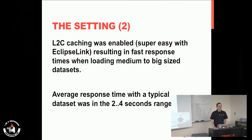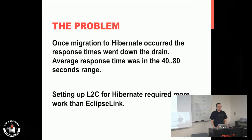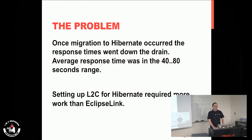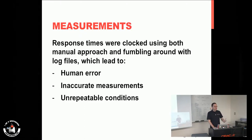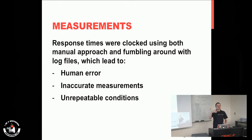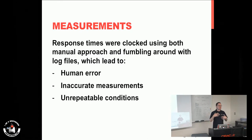We had measurements showing that EclipseLink was very fast — replies in the 2 to 4 seconds range, which was pretty good. But when we did the migration to Hibernate, responses were coming in within 40 to 80 seconds. That was definitely not acceptable. We had measurements made by hand, looking through log files trying to match entry and exit points for operations to find the timing, but that would not scale for the amount of measurements and tests we needed to run.